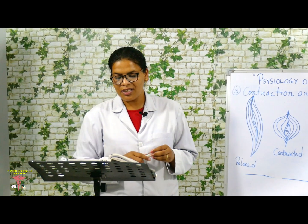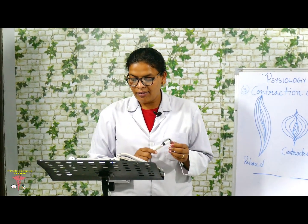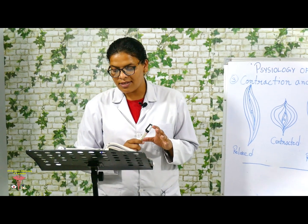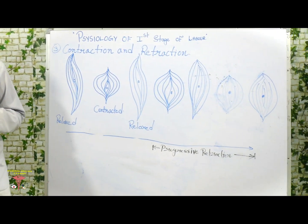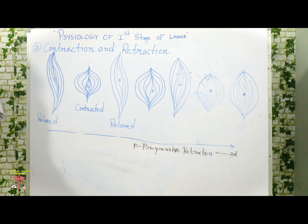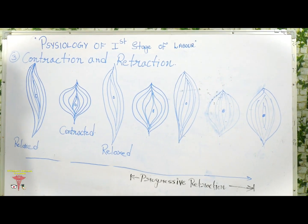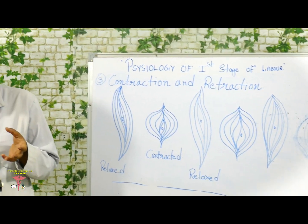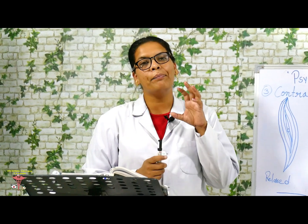Contractions, in contrast, are a temporary reduction in the length of the muscle fibers, which return to their full length during relaxation. Retractions result in permanent shortening — the fibers are shortened once and for all. So in contractions, the fibers temporarily reduce in size.